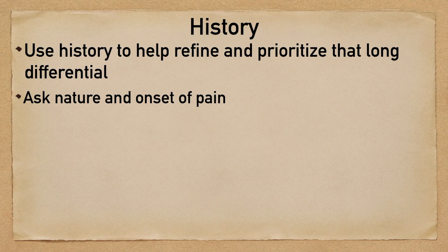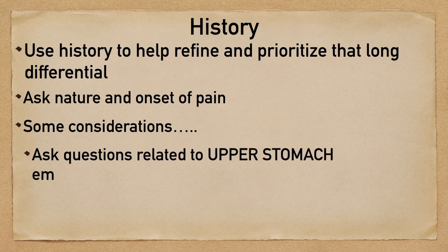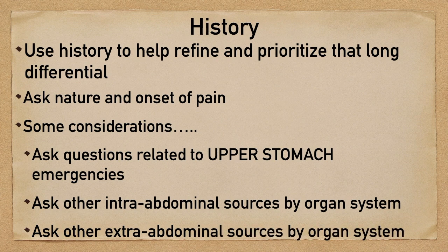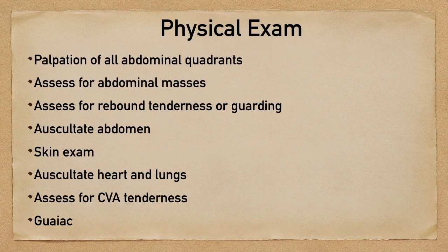You'll also want to perform a review of systems. Some considerations on how to do that include using the UPPER STOMACH mnemonic, or you can go by organ system starting with intra-abdominal sources and then moving to extra-abdominal sources.